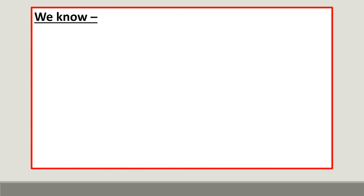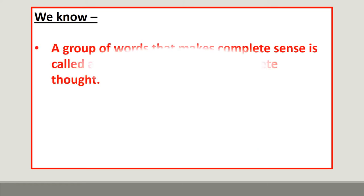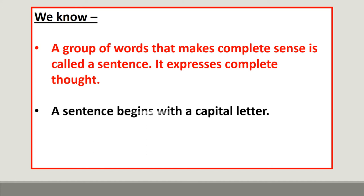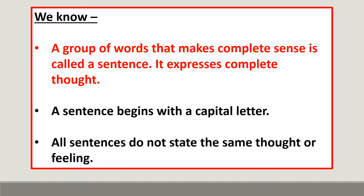What exactly is a sentence? We know a group of words that makes complete sense is called a sentence. It expresses a complete thought. A sentence begins with a capital letter. All sentences do not state the same thought or feeling.